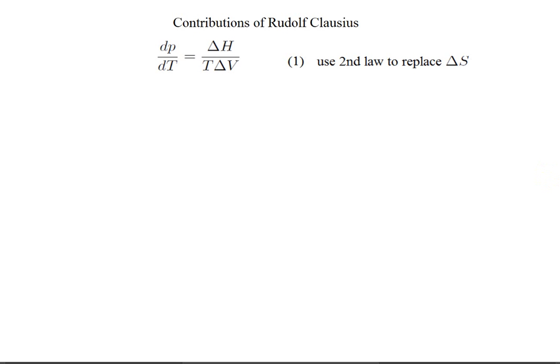So what did Rudolph Clausius do? Well, for one thing, he out-engineered Clapeyron by making clever approximations. In line one, I'm replacing delta S with delta H over T. This is what Clapeyron already did, but this derivation is slightly closer to the one used by Clausius.